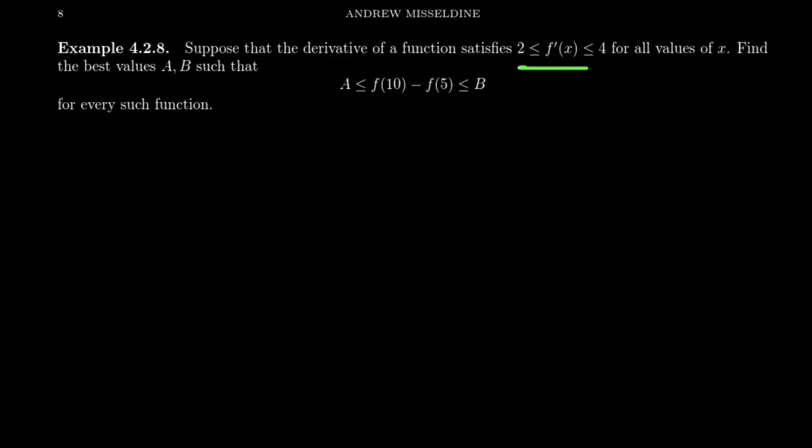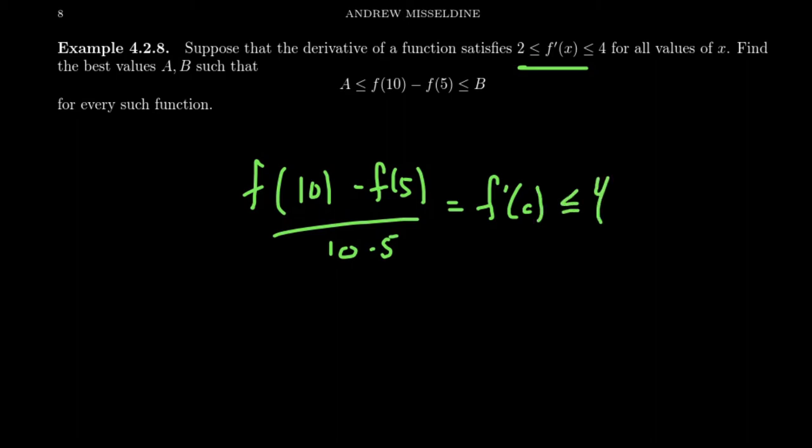So we will determine a and b using the mean value theorem, and we're going to consider the average rate change going from 5 to 10. That is, take f of 10 minus f of 5 over 10 minus 5. Because the mean value theorem applies, this equals the derivative somewhere, where the derivative is bounded by 4 and 2. 10 minus 5 is 5. So if we times both sides by 5, we end up with 2 times 5, which is 10, which is less than or equal to f of 10 minus f of 5, which is less than or equal to 5 times 4, which is 20.